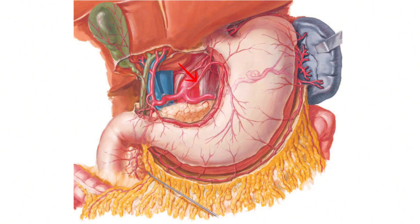The left gastric artery is the smallest branch of the celiac trunk. It ascends to the gastroesophageal junction and sends its esophageal branches upward to the abdominal part of the esophagus. Then it turns and descends along the lesser curvature of the stomach in the lesser omentum. Finally, it terminates by anastomosing with the right gastric artery.